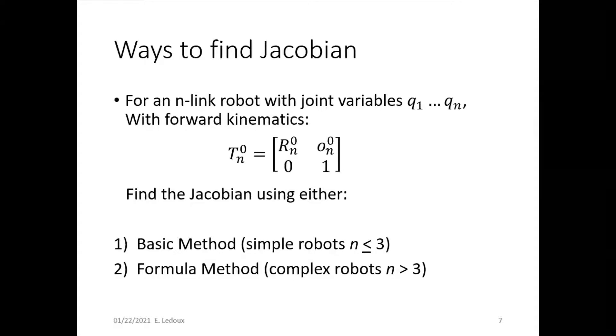There are two ways to find the Jacobian. For an n-link robot with joint variables q1 to qn, the forward kinematics are given. We can find the Jacobian using either a basic method, which is for simple robots, like if they have three or fewer joints.